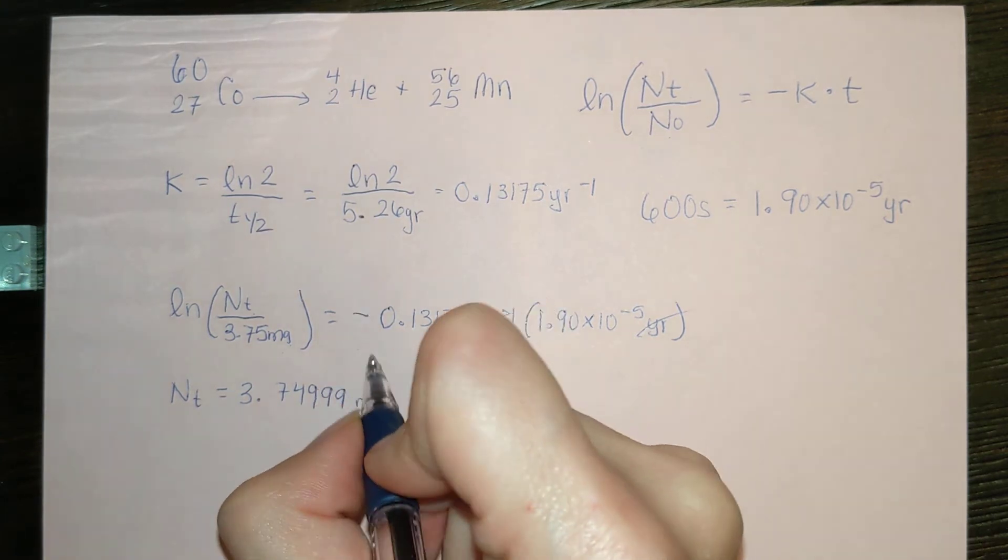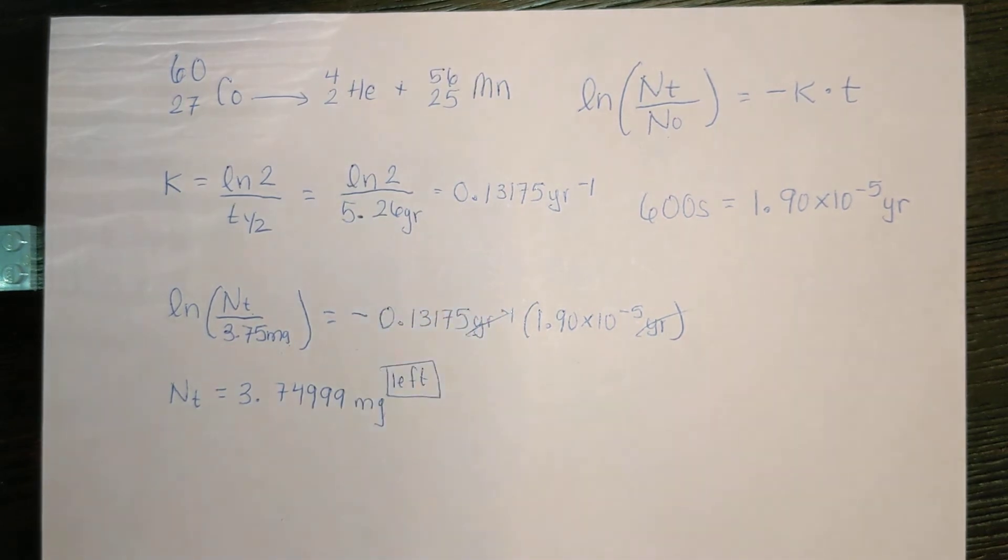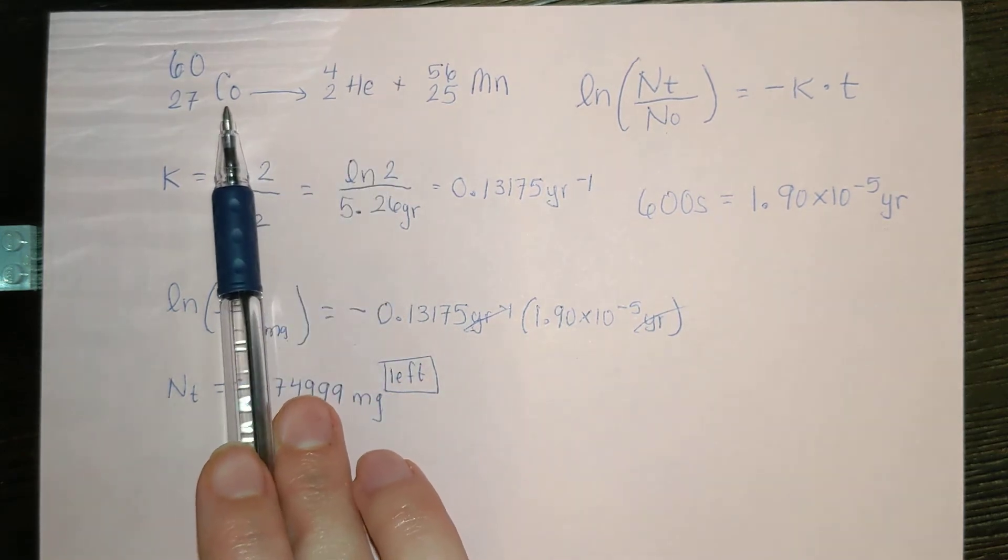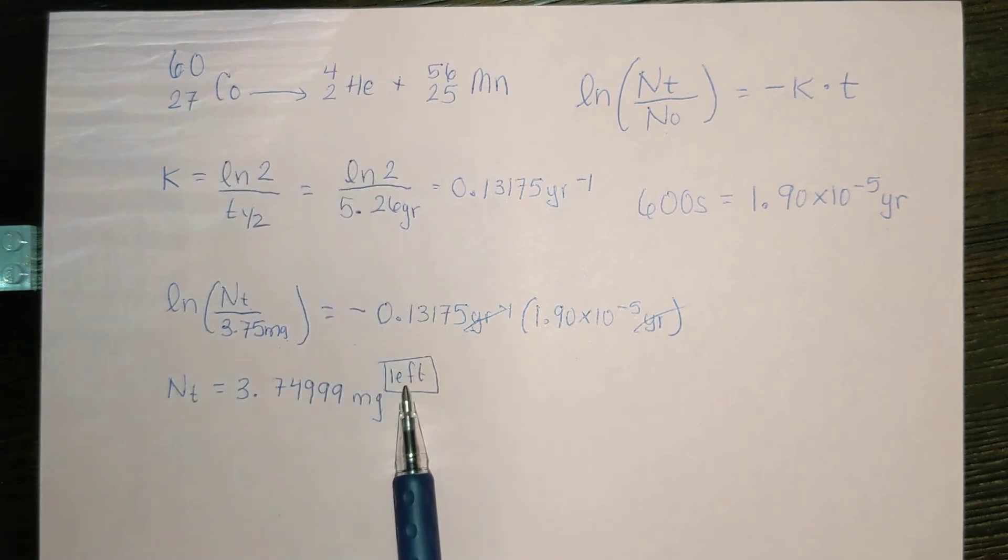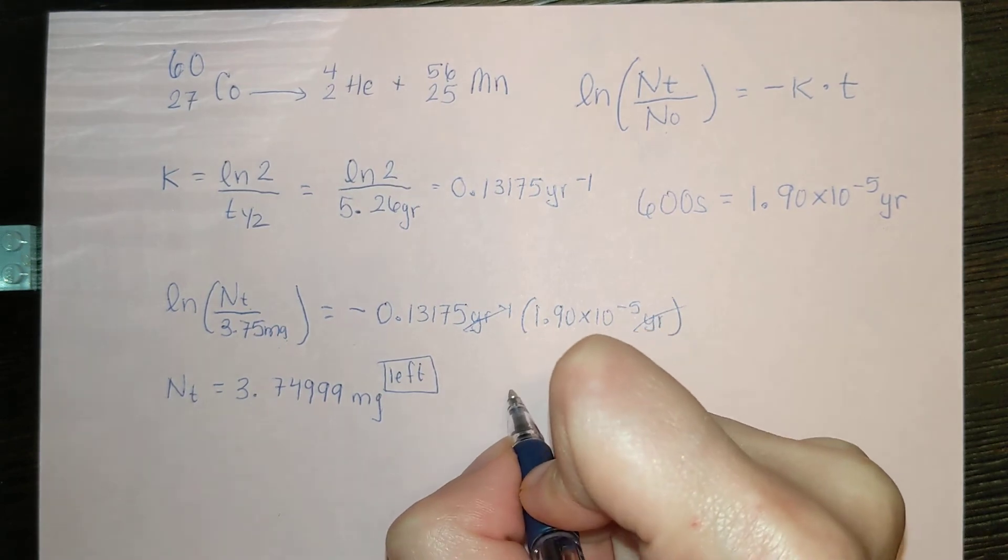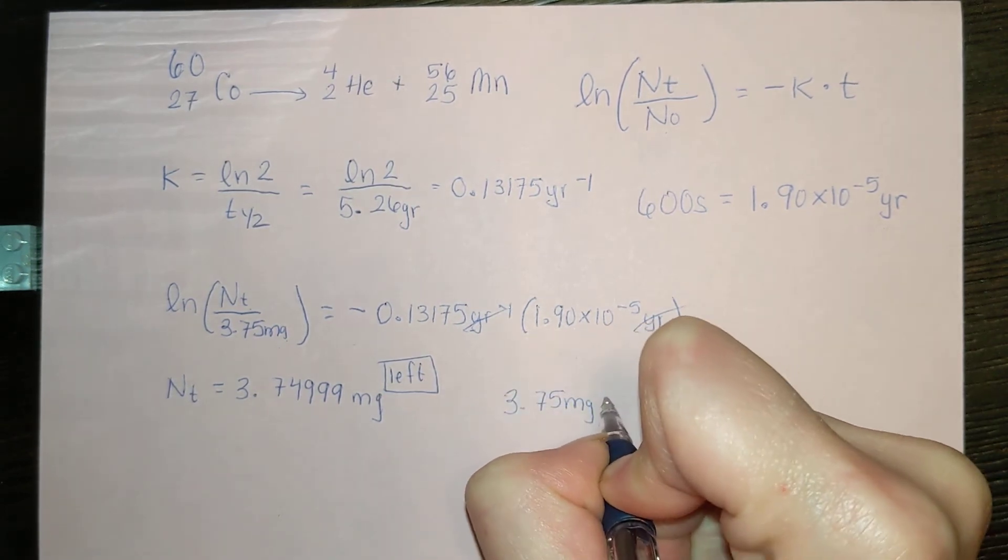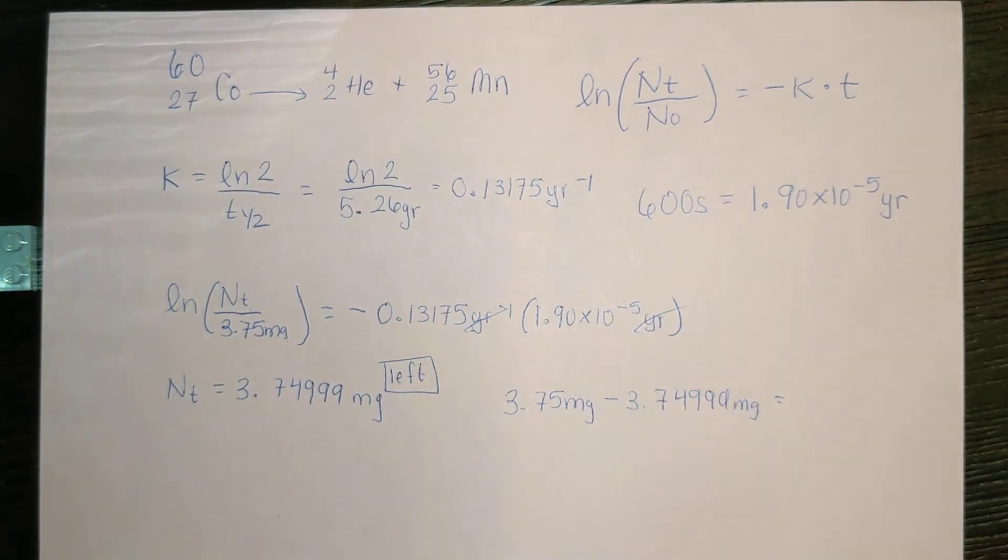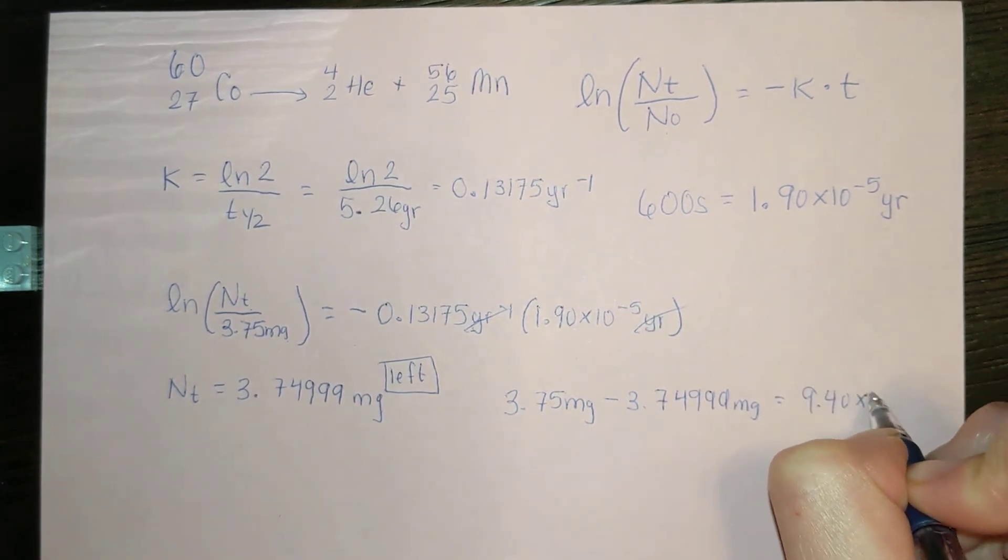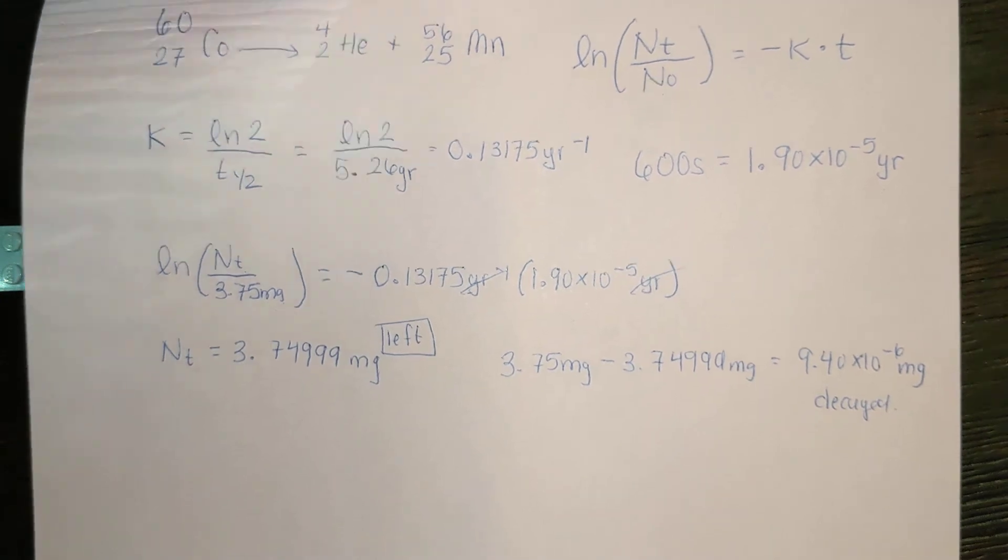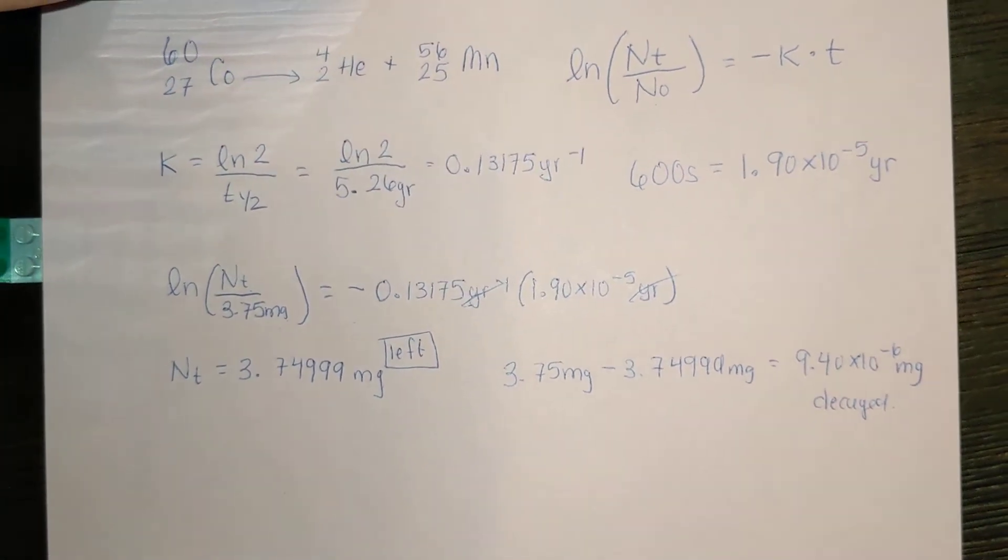I want to know how much, so this is how much is left. If we're being asked how many alpha particles, we need to know how many cobalt atoms have actually decayed. If we know what's left and we know what we had initially, the difference between those two has to be the mass of cobalt that decayed. Our 3.75 milligrams subtract the 3.74999 milligrams, we have 9.40 times 10 to the minus 6 milligrams have decayed.